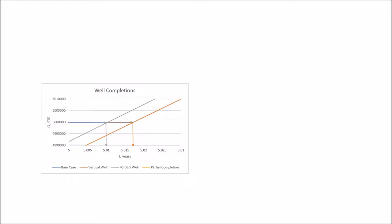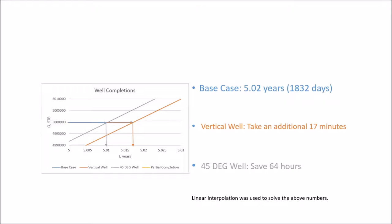The base case takes a little over 5 years to deplete the whole reservoir of its 5 million barrels. In comparison, the vertical well only needs 17 more minutes of production time to reach 5 million stock tank barrels, and the 45 degree well actually saves 64 hours of production time compared to the base case. But in a time span of 5 years, these differences are negligible.